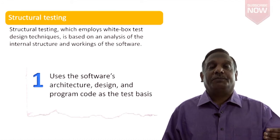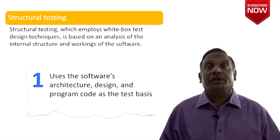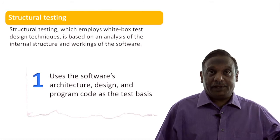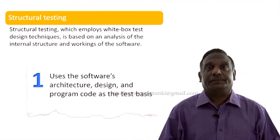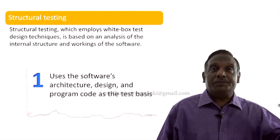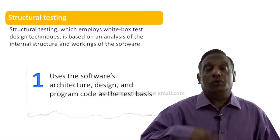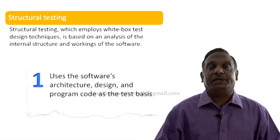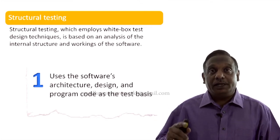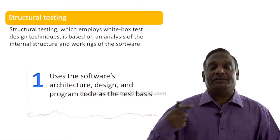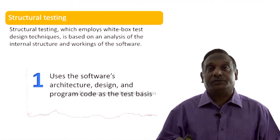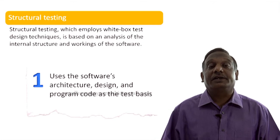If you compare it with functional testing, functional testing employs a lot of black box test design techniques. It looks at the system from what goes in and what comes out. But in structural testing we are not only bothered about what comes in and goes out — we are more bothered about how the code is written, how the structure has been developed, and what is the architecture of the system. Based on that understanding, we exercise the structures using certain design techniques to perform testing.